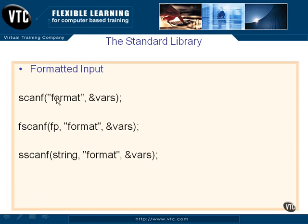For formatted input, we have scanf, which takes a format string — percent s, percent d, and so on — and reads from standard in, assigning the values into variables. Those variables must be passed as pointers using the ampersand operator, because scanf needs the addresses of the variables, not their current values — it's going to read from standard in, reformat according to the format string, and place the data into those variable locations. fscanf does the same thing using a file pointer instead of standard in. sscanf reads from a string, reformats it according to the format string, and plucks out items to place into the specified variables.